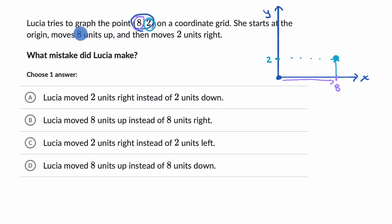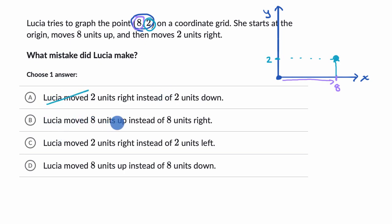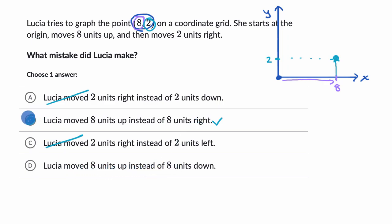Lucia went eight up and two to the right, so it looks like Lucia actually maybe confused the x and y-coordinates. Which mistake did Lucia make? Choice A: Lucia moved two units right instead of two units down — no, it should have been two units to the right instead of two units up, so I'll rule that one out. Choice B: Lucia moved eight units up instead of eight units to the right — that one looks right, so I like this one. Choice C: Lucia moved two units to the right instead of two units to the left — no, the two is talking about how many units up, not right or left. Choice D: Lucia moved eight units up instead of eight units down — no, it should have been eight units to the right like we see in choice B. And we're done.